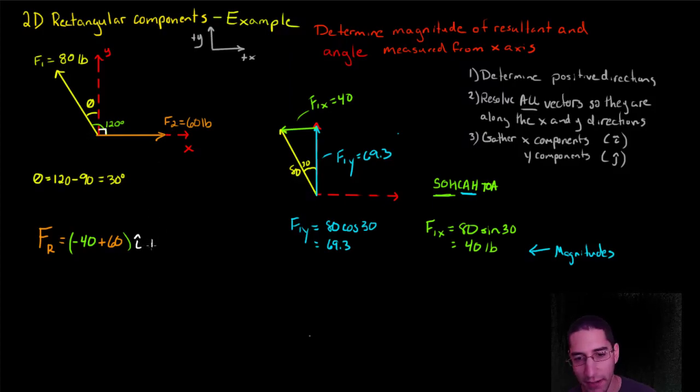Next, I am going to need to add in my j component. My j component, my F1, is 69.3. It's pointing up, so it's positive. So, let's do 69.3. And my F2 does not have a y component. It's only along the x axis, so it's a zero. I'm not going to write that in. So, this will be a j component. Let's add these together. This is going to be equal to minus 40 plus 60 is 20i. 20i plus 69.3j.